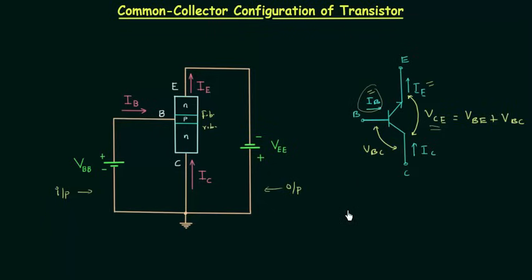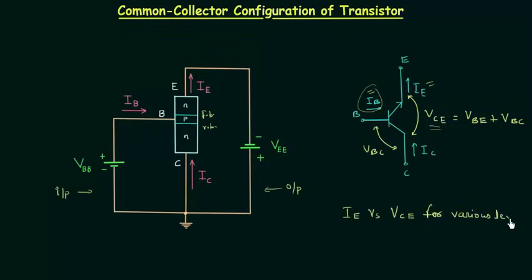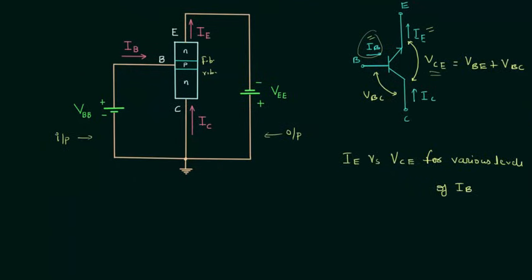So we have the graphical relation between the emitter current versus voltage VCE for various levels of base current IB. Now there is one very important thing that we are going to conclude.